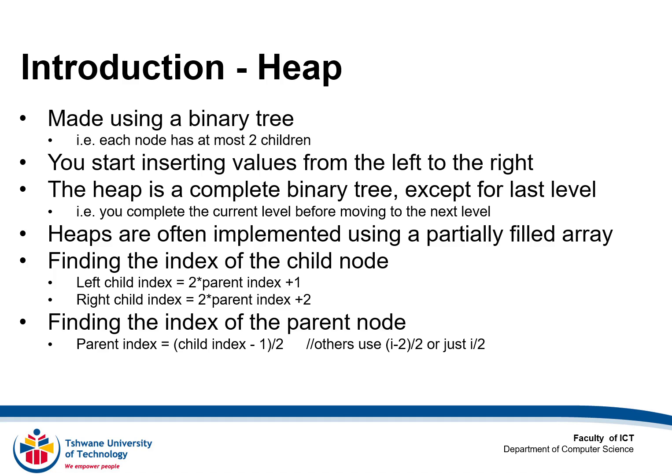Heaps are often implemented using partially filled arrays. To find the index of a child node, one would use the following formulas: for the left child it is 2 times parent index plus 1, and for the right child it is 2 times parent index plus 2. Finding the parent node, you use child index minus 1 divided by 2. Others also use child index minus 2 divided by 2, or just child index divided by 2.